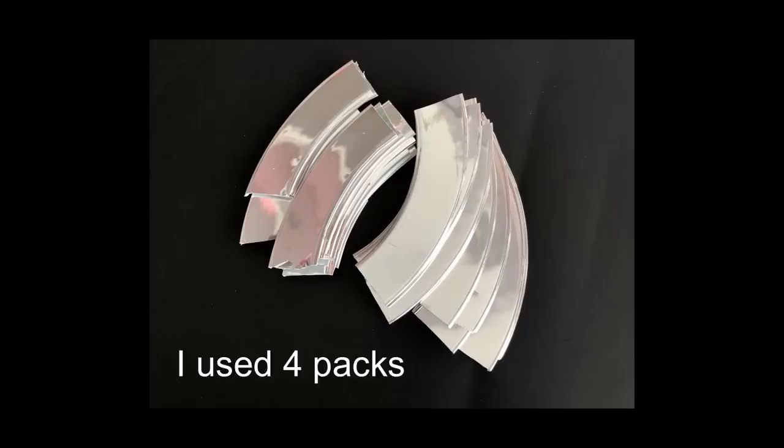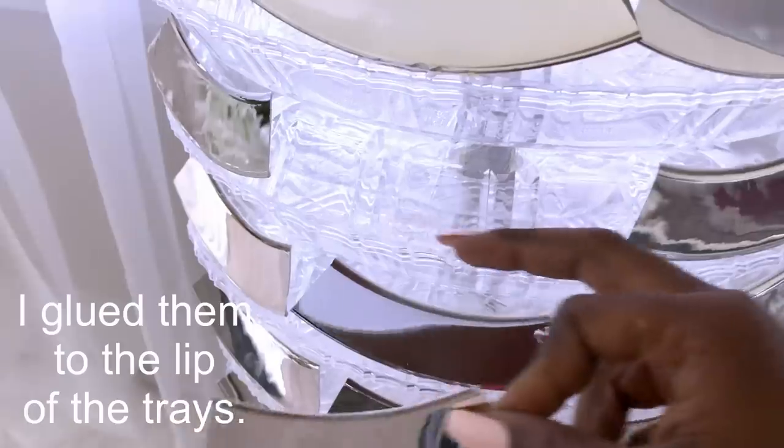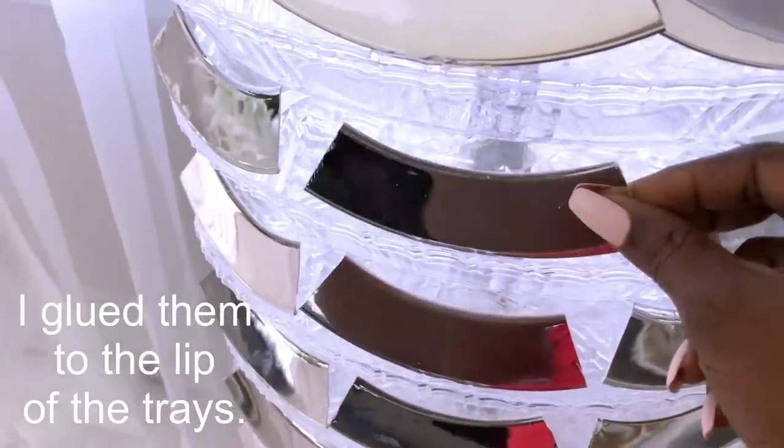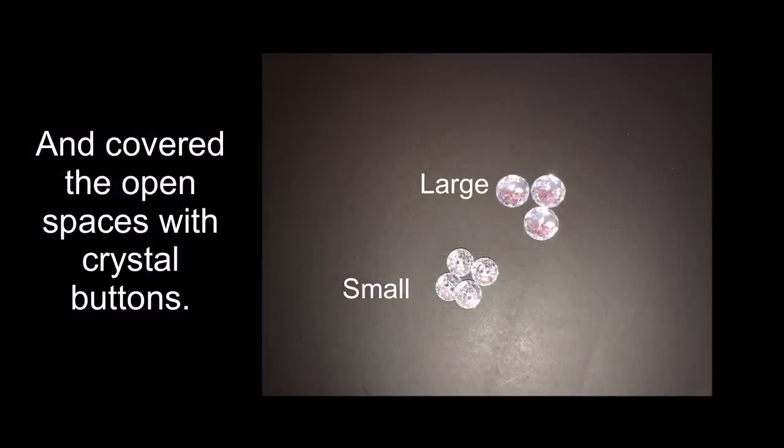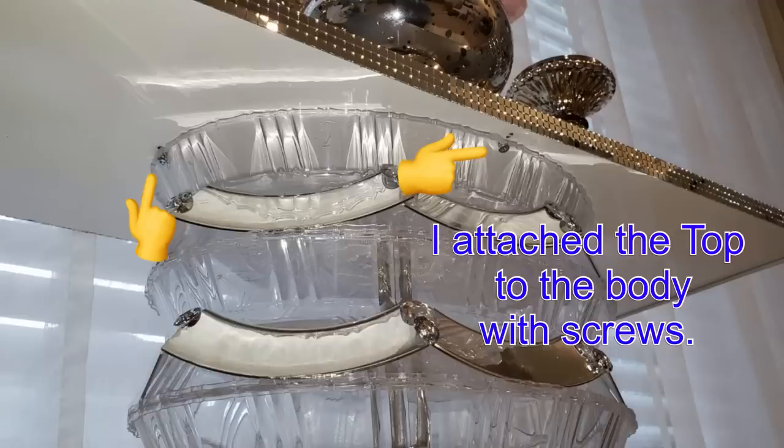I cut them to smaller pieces and glued them to the lip of the trays and then I covered the open spaces with large and small gems. I forgot to mention earlier that I also attached the upper plate to the board that's on top with screws.